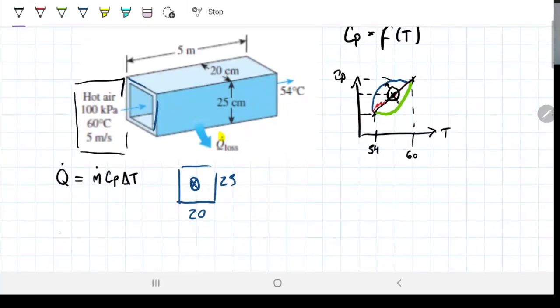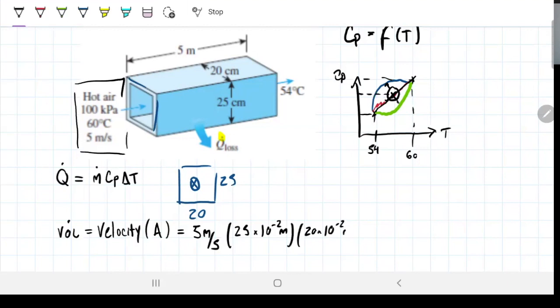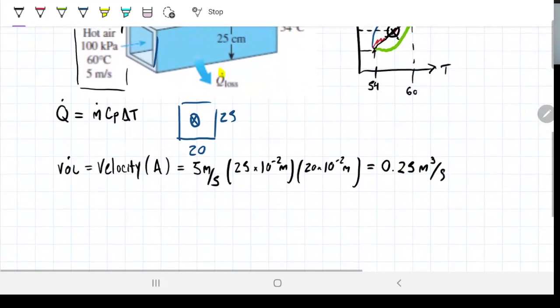So let's start by calculating our volume flow rate. Put velocity so we don't get confused. Velocity times the area, the cross-sectional area in this case. Our velocity is 5 meters per second, and our area is going to be 25 times 10 to the minus 2 meters times 20 times 10 to the minus 2 meters. What we get out of this is a volume flow rate, and that's 0.25 meters cubed per second. That's the volume flow rate going through this duct at the entrance before it leaves at 54 Celsius on the other side.